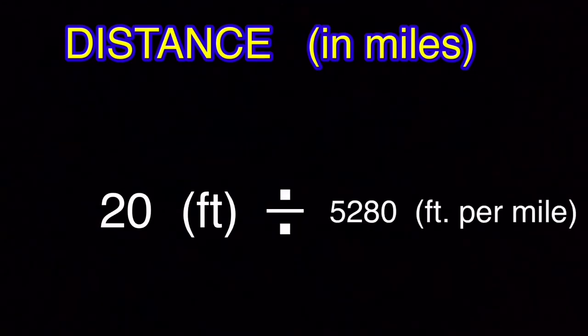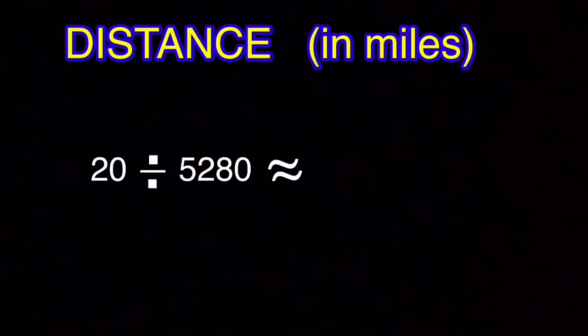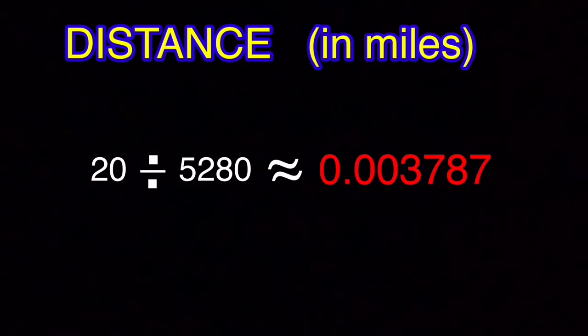Starting with distance, I chose 20 feet, but you can choose any distance - it can be 60 feet 6 inches, 20 feet, 30 feet, doesn't matter. Then you take the distance you threw the ball, for me 20 feet, and divide that by the amount of feet in a mile, 5,280. So 20 divided by 5,280 is about 0.003787.